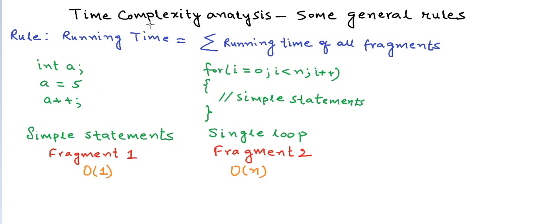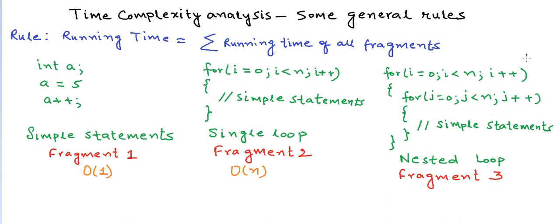If we have a nested loop, the outer loop will run n times and corresponding to each run of the outer loop, the inner loop will also run n times. So the simple statements will be executed n × n times, and the running time will be some constant times n². Clearly, this fragment is Big O of n² in terms of time complexity. Similarly, if there were three nested loops, the complexity would be Big O of n³.